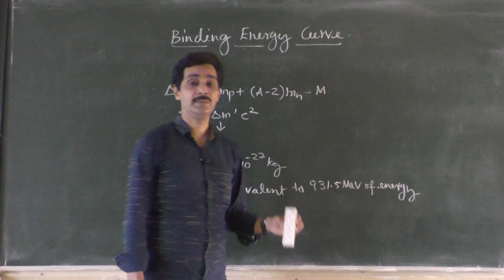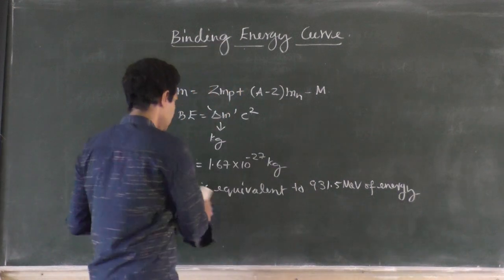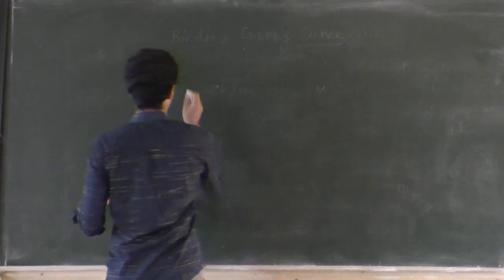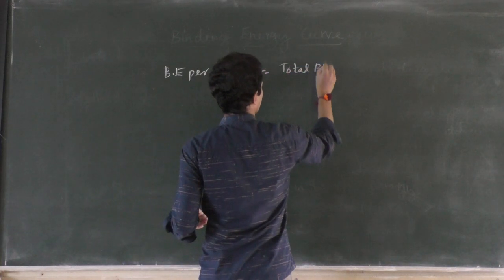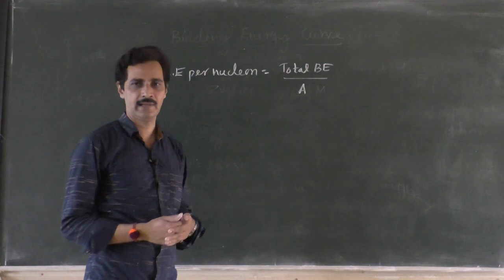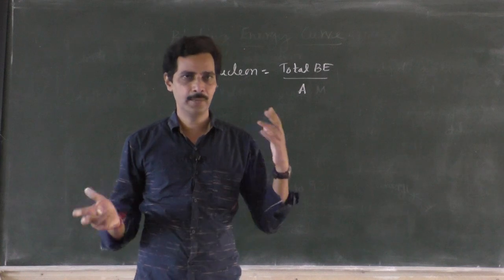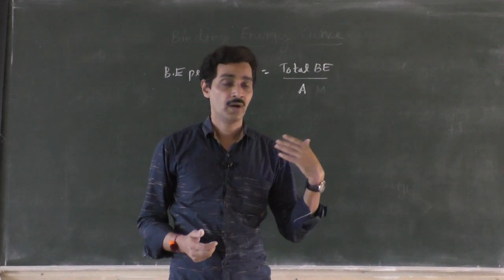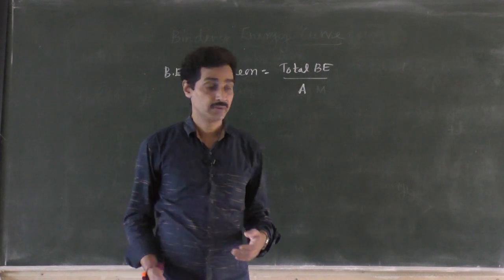If you calculate the total binding energy of any nucleus, that does not give you the exact idea of the stability or strength of the nucleus. To test stability, you must check binding energy per nucleon — the total binding energy divided by the mass number. This is called specific binding energy. A nucleus may have high total binding energy — for example, uranium has more binding energy — but there are 235 protons and neutrons inside, so per nucleon the energy available is much less, and it is not stable.